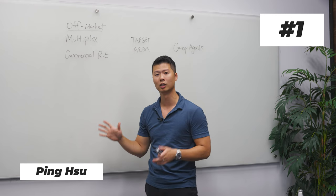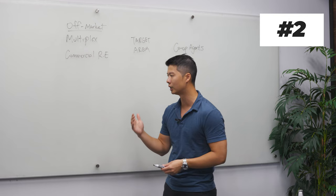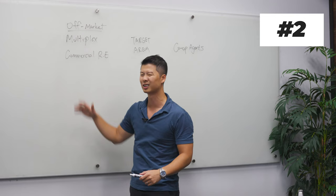Number two is that the class of property cannot be just regular residential. That won't work because there's too much inventory out there. You need to be looking for something that's a little bit more unique, such as apartment buildings, office buildings, retail stores and all that stuff.